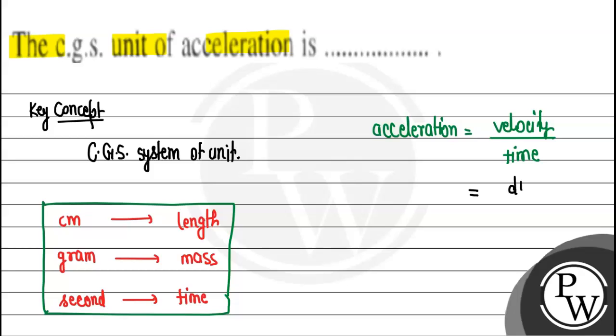So displacement upon time, times one upon time again, because there was already a time. So this became what? Displacement upon time square. Now displacement is a kind of length, so on the top there is a length portion and on the bottom there is a time portion, two time portions.